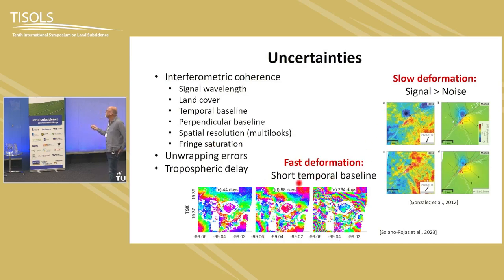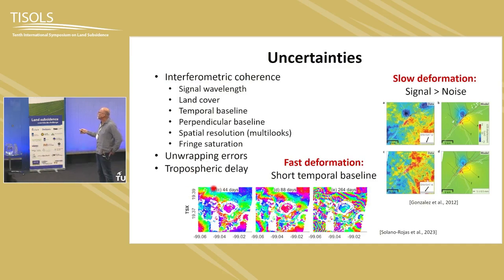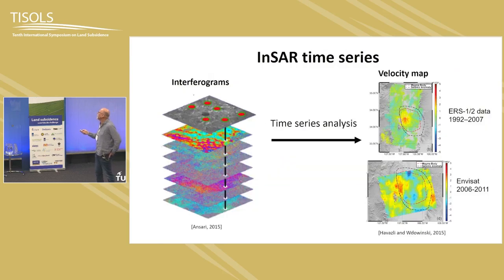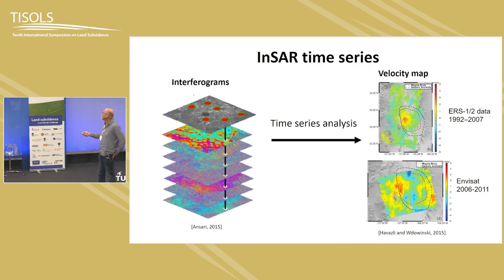For fast deformation, we can have fringe saturation. In our Mexico City studies, when we use a short temporal baseline we can resolve the deformation better than with a longer temporal baseline, which causes saturation of fringes. That's two opposite cases. From individual interferograms, we then move to InSAR time series — we want to grow information from individual interferograms to see how things change over time.